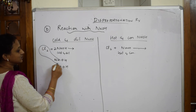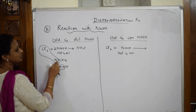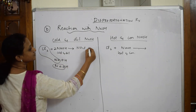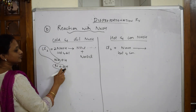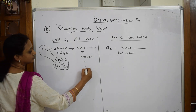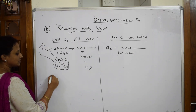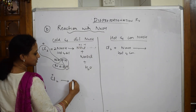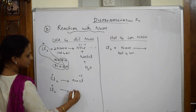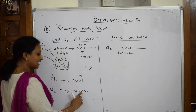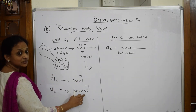In the cold and dilute condition: 2NaOH + Cl₂ → NaCl + NaOCl + H₂O. One chlorine gives NaCl and the other gives NaOCl (sodium hypochlorite). Now for oxidation states: in Cl₂ the oxidation state of chlorine is zero. In NaCl it is −1, and in NaOCl it is +1. So chlorine goes from 0 to −1 (decrease) and from 0 to +1 (increase).